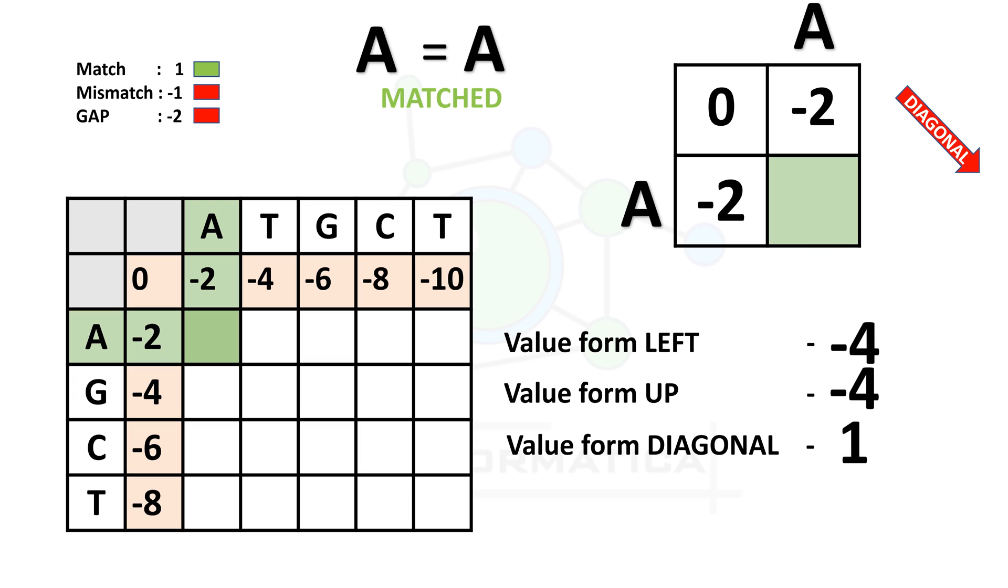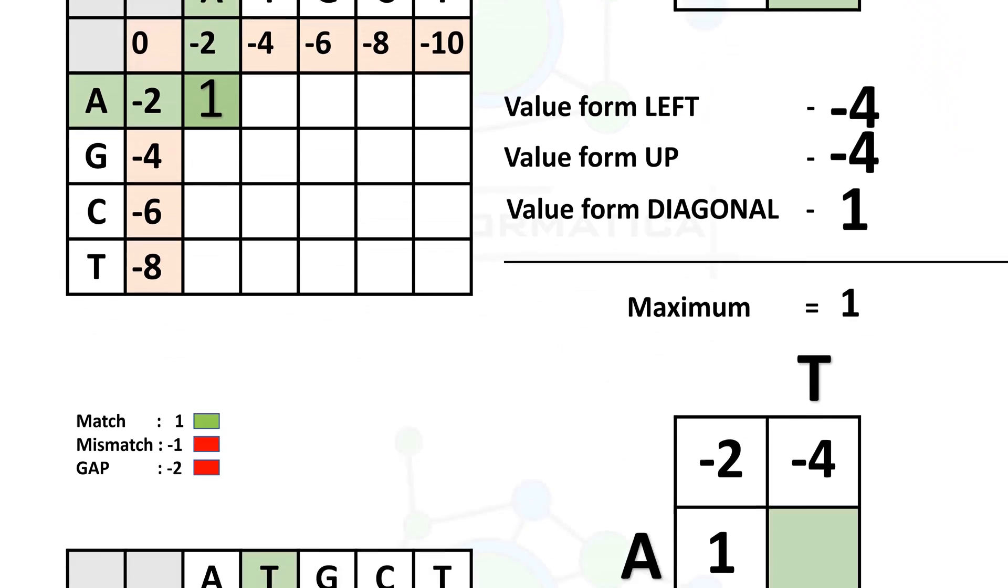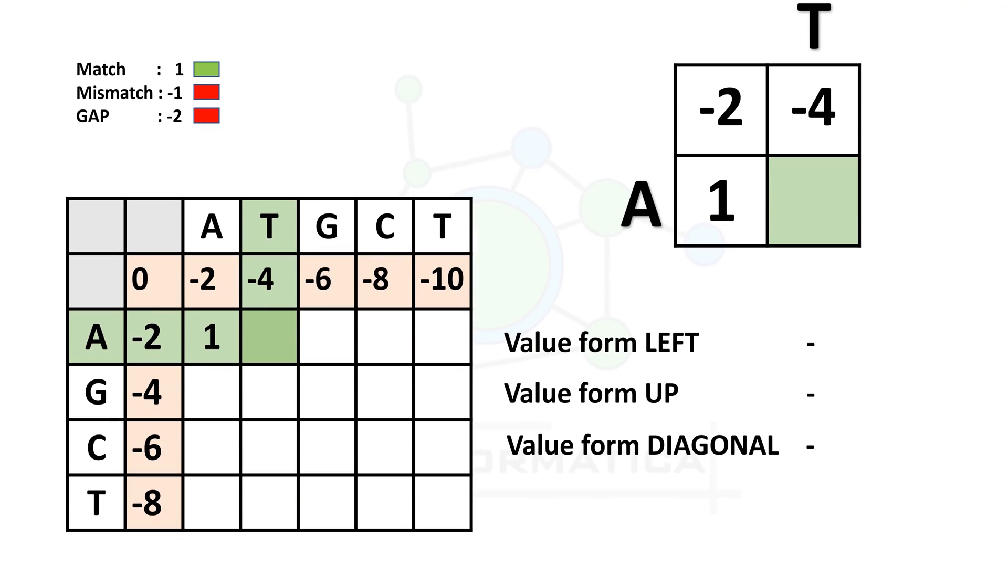Now we have to take the maximum value among these three values. Here, in this case, it is 1. So we will put 1 in the green box.